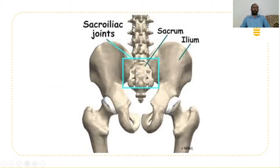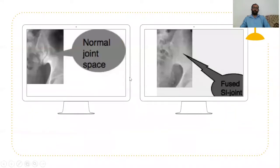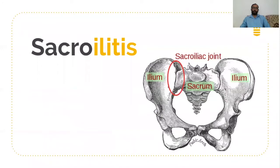In applied anatomy, we already discussed the importance of sacroiliac joints, which transmit the weight of the body through the vertebra towards both lower limbs. When we advise X-ray L-spine AP view and lumbosacral spine AP view, we can see the sacroiliac joint with normal joint space. In this X-ray, it is fused due to chronic sacroiliitis.